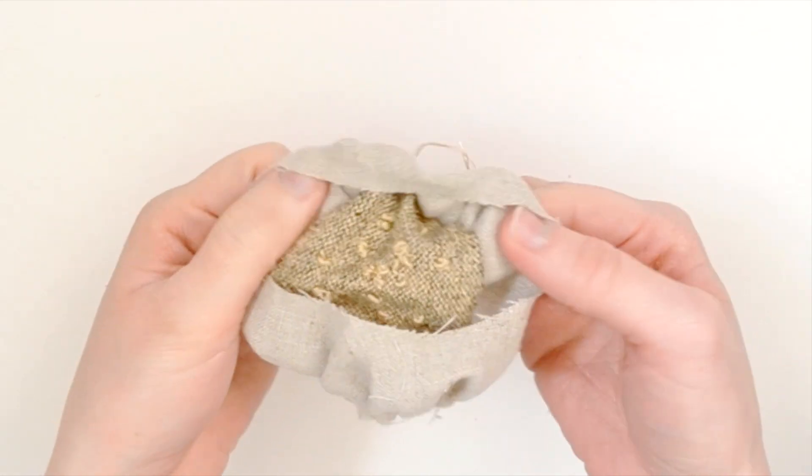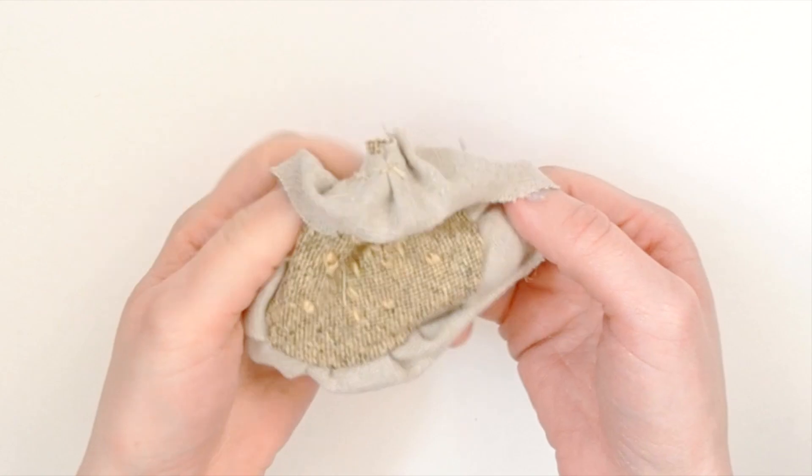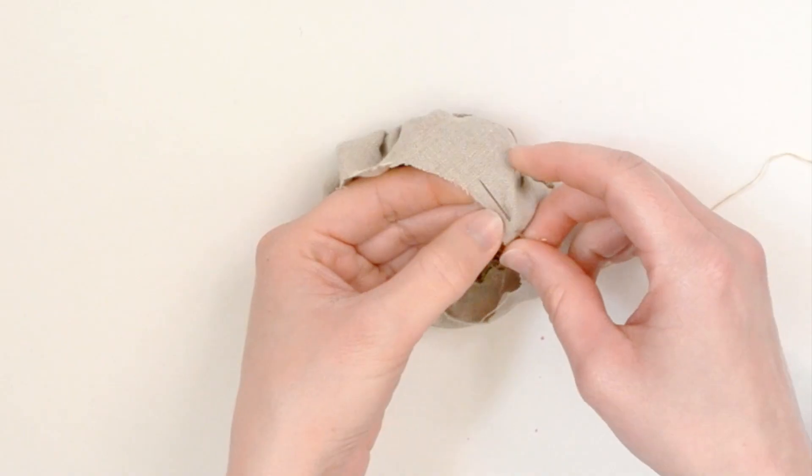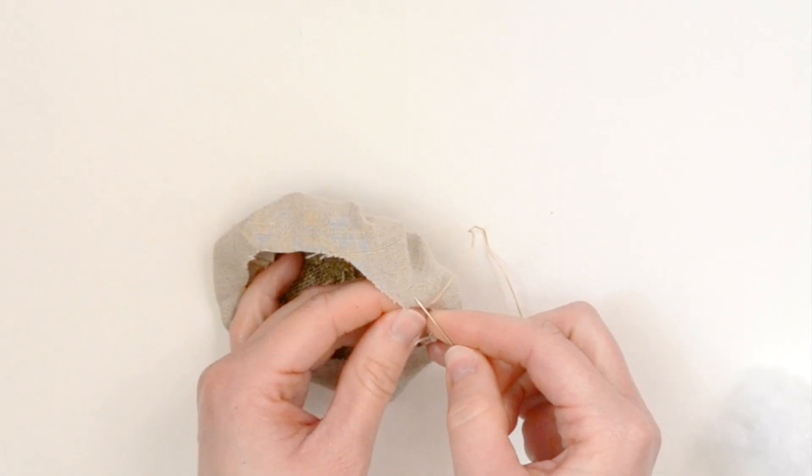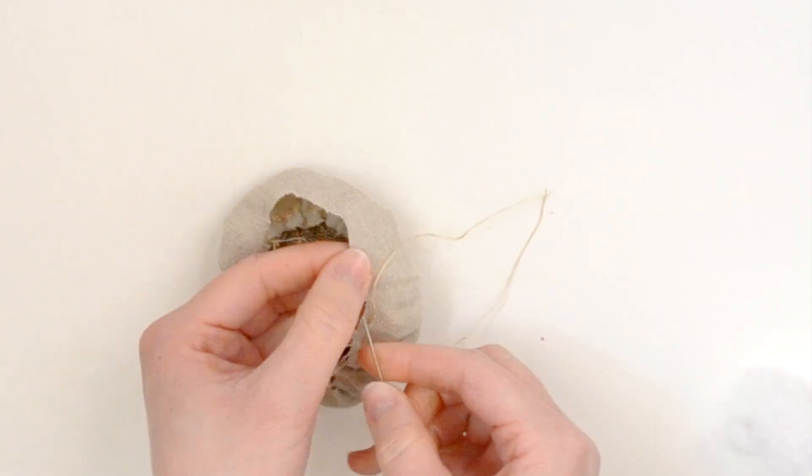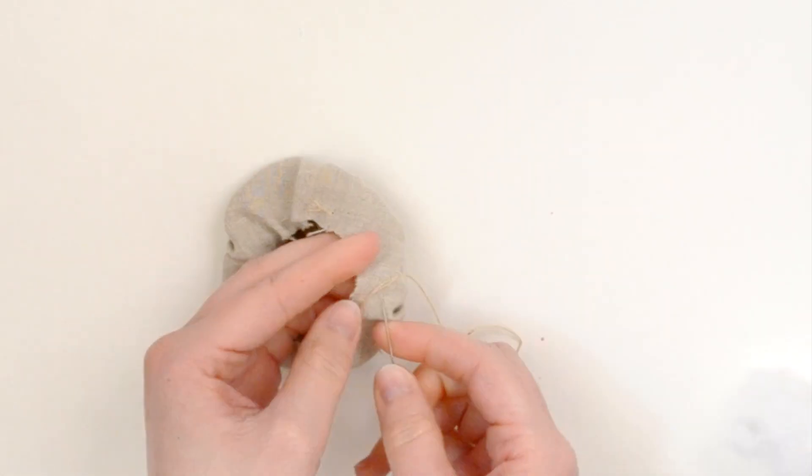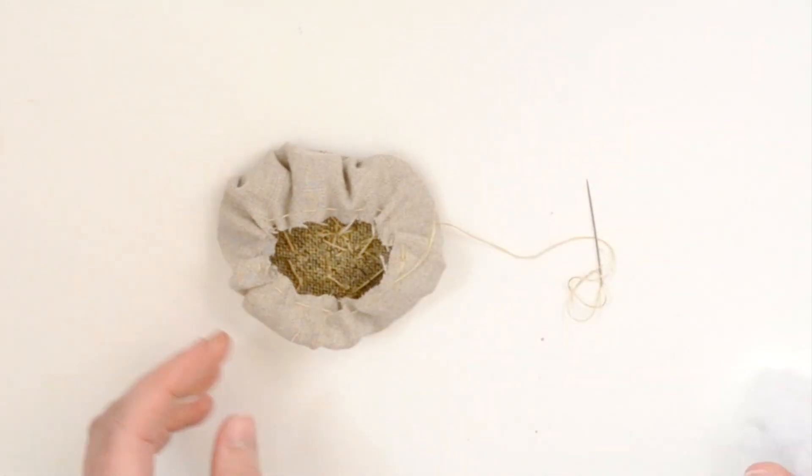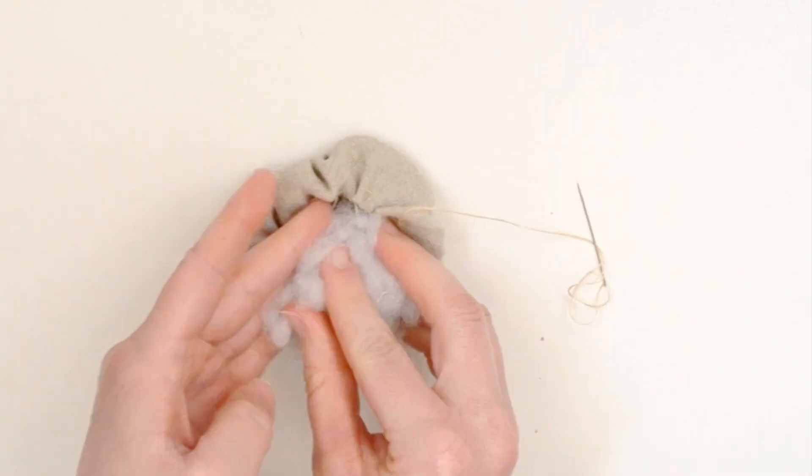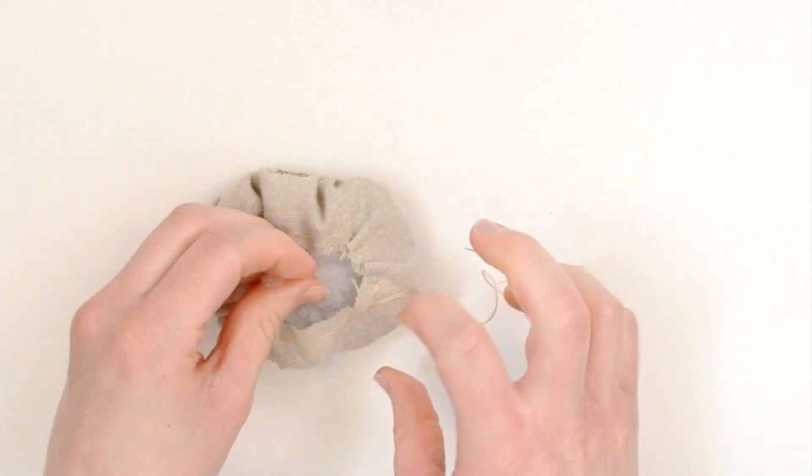Once you've stitched all around, turn your mushroom cap, then baste around the inner edges of the gill and gather them slightly. Once it looks like this, begin to stuff your mushroom cap and gather the edges as you do this.